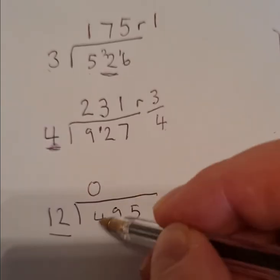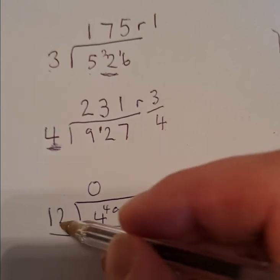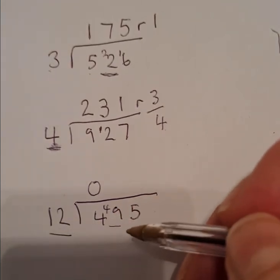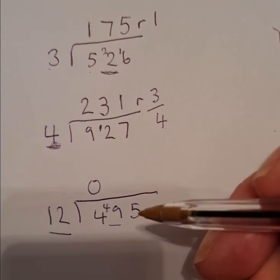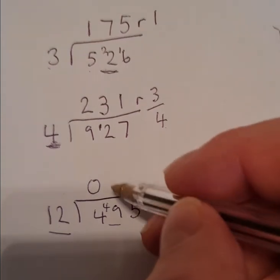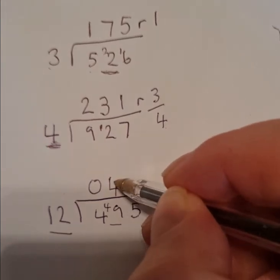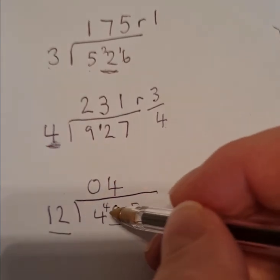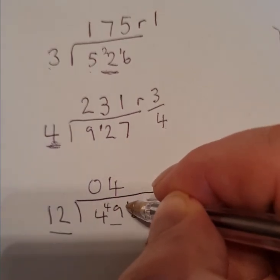Because this time we're doing 12 into our numbers. 12 into 4 doesn't go. So we carry our 4 across to the next number. We're now doing 12 into 49. Now if you're confident with your times tables, you will know that 12 times 4 is 48. So 4 12s is 48. And I've got 49. So I've got 1 remainder. And that goes there.